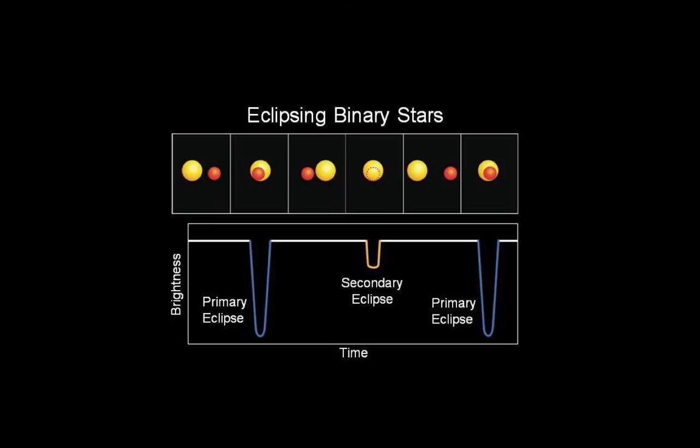In eclipsing binary stars, one star passes in front of the other star from the perspective of us here on Earth. And if you think about it, when the two stars are separate, that's when you're going to get the most amount of light from the combined system of the two stars. When one star blocks light from the other star, the combined light must go down. At some point, the first star will orbit all the way around and go behind the other star. And then you have a secondary eclipse.